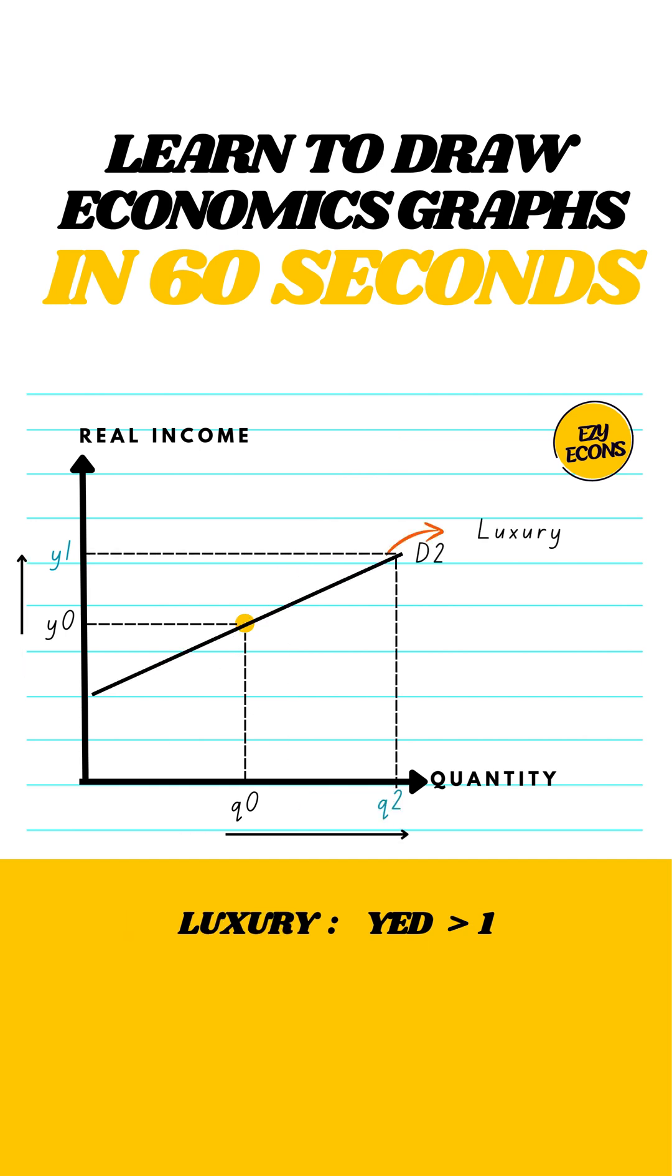Luxury goods have a YED above 1. That means demand increases more than proportionally with income. The curve is upward sloping and flatter.